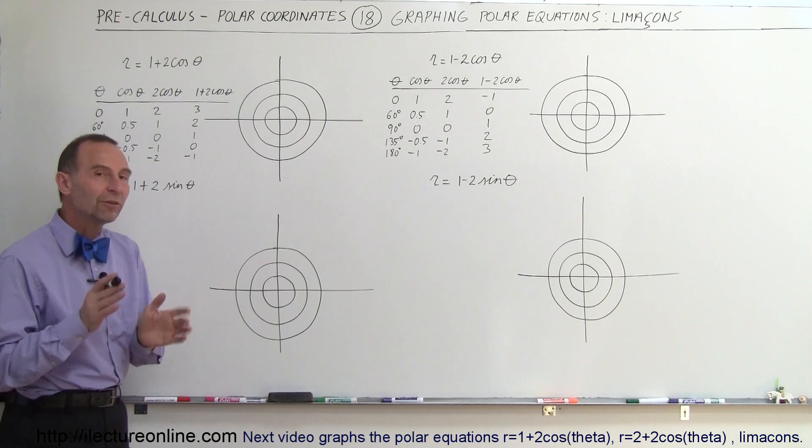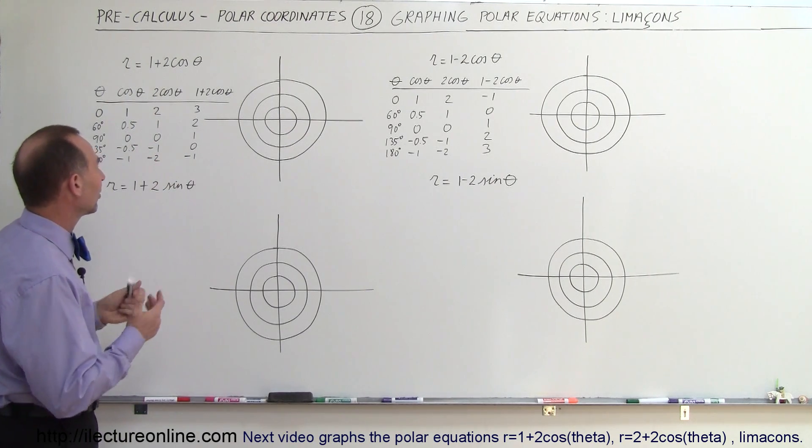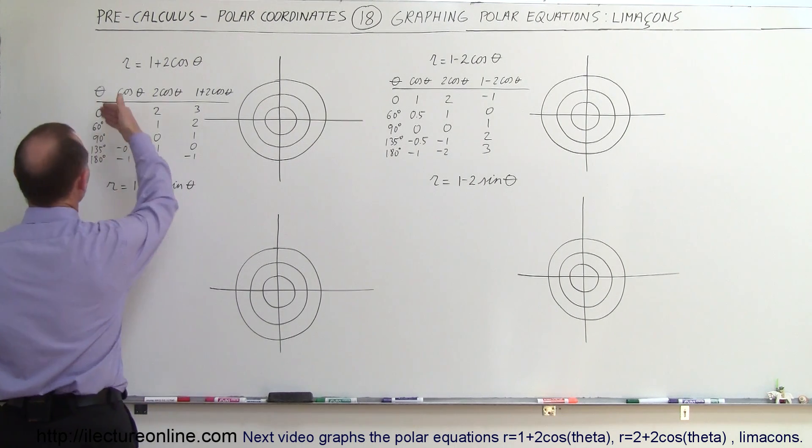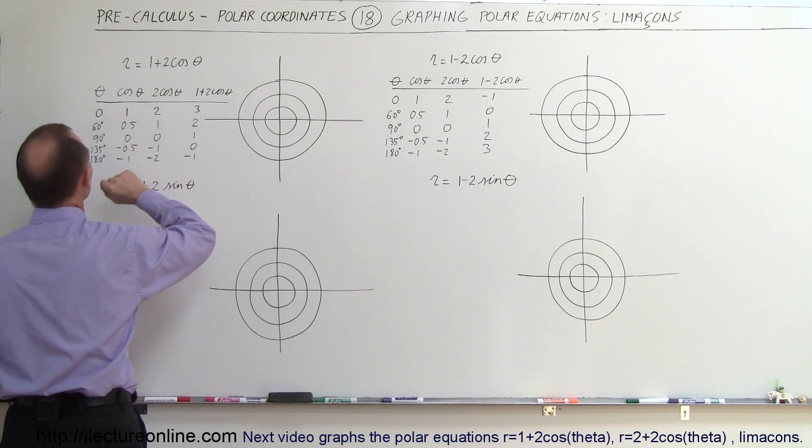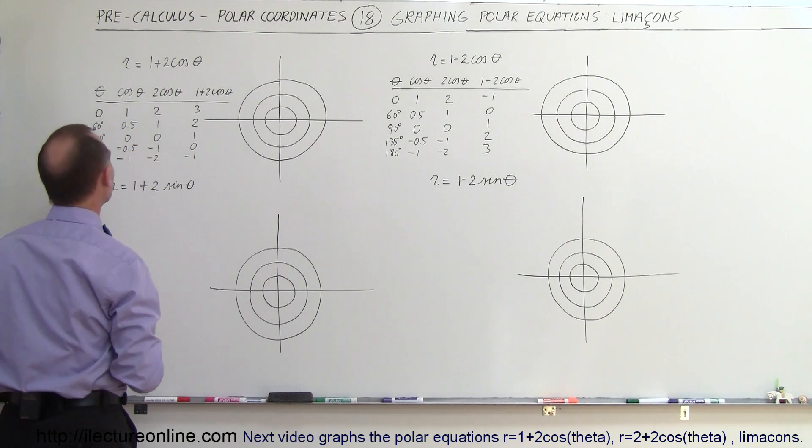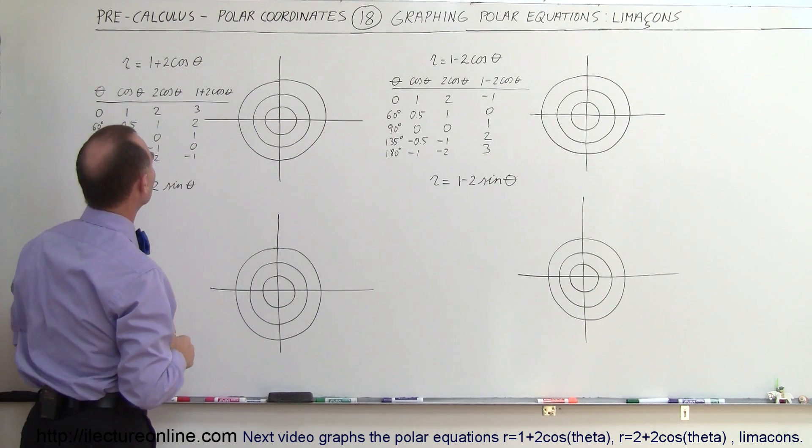We've done one video before where we had something that looked like this, and so let's go ahead and redraw that a little bit more quickly this time. So we have some basic tables, table of values here. So for different angles of 0, 60, 90, 135, and 180 degrees, what is r equal to in that case?